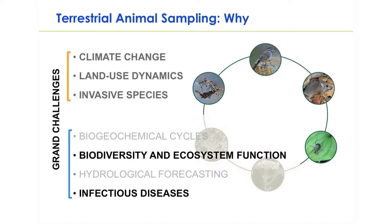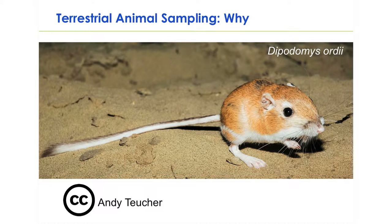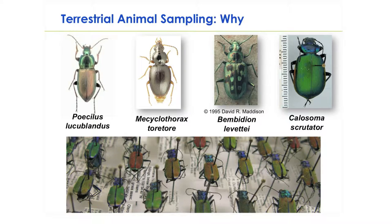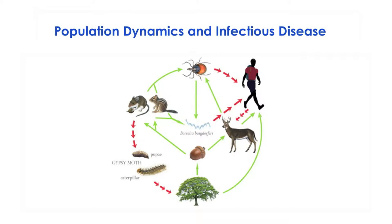Infectious diseases is easy to understand for most people, but why in the context of biodiversity and population dynamics? And why are these data important in and of themselves? It's not just for the amazing field experiences, like the first or even 150th time you catch an Ord's kangaroo rat, or when you're pinning and identifying stunningly beautiful ground beetles. There really is more, because field work is not all rainbows and shiny beetles. There are a number of really important ecological questions that we hope NEON animal data will help the scientific community to answer.